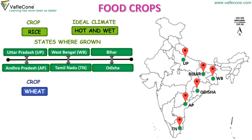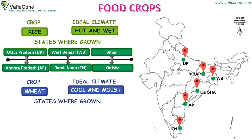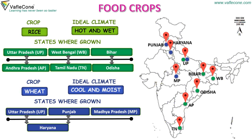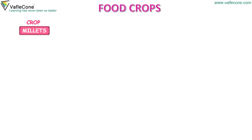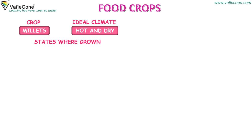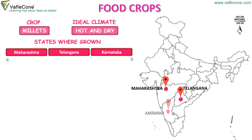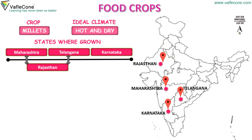Wheat. The ideal climate for wheat is cool and moist. States where wheat is grown are Uttar Pradesh, Punjab, Madhya Pradesh, Haryana and Rajasthan. Millets. The ideal climate for millets is hot and dry. States where millets are grown are Maharashtra, Telangana, Karnataka, Rajasthan and Gujarat.